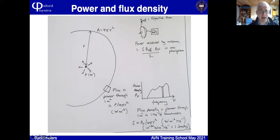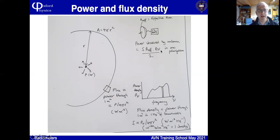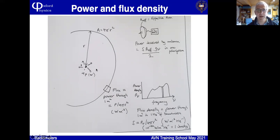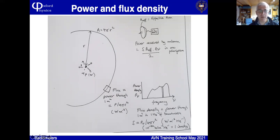Our antenna has a certain effective area and we're receiving signals over a certain bandwidth. The amount of power we receive is the flux density of the source times the area of the antenna times the bandwidth. Conventionally it's actually half of that, because if the source radiates its power equally into both polarizations, an antenna can only pick up one polarization at a time, so per polarization you're picking up half the power — hence a factor of one half.